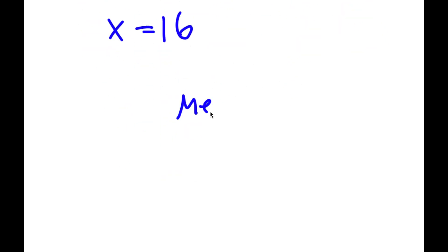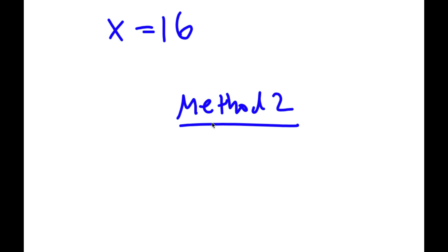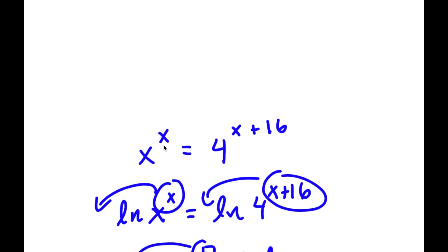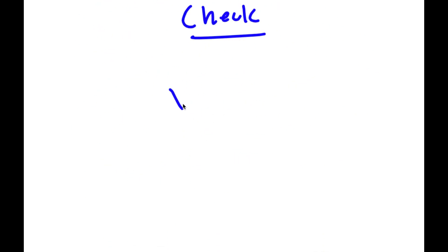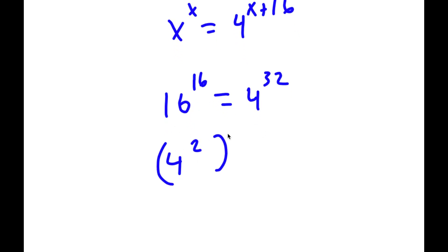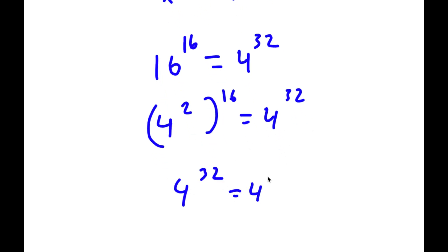For method 2 to verify: I have x to the power of x equals 4 to the power of x plus 16, with x equals 16. So I have 16 to the power of 16 is equal to 4 to the power of 32. Since 16 is 4 squared, I have 4 squared to the power of 16 is equal to 4 to the power of 32, meaning 4 to the power of 32 is equal to 4 to the power of 32.